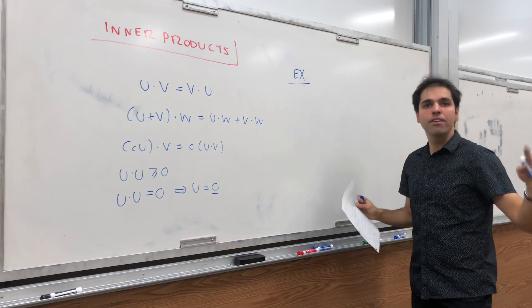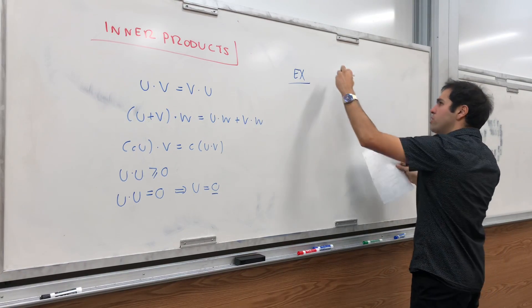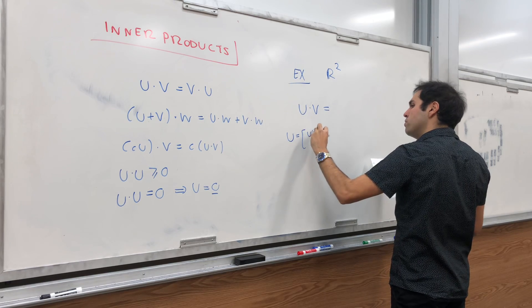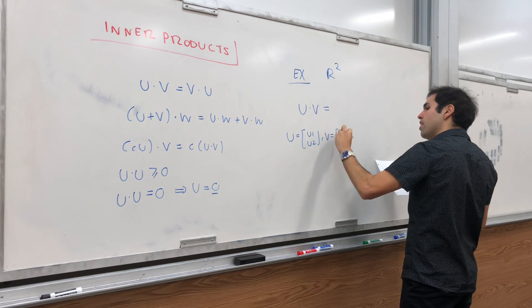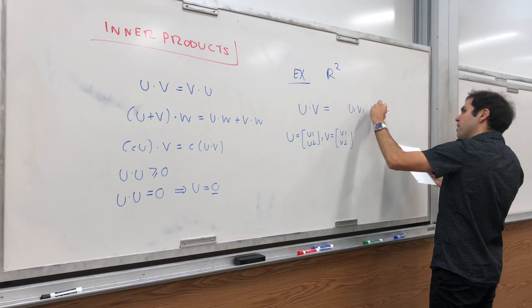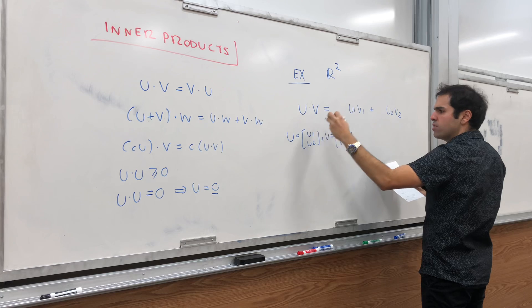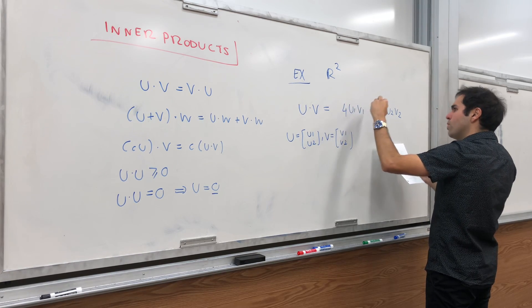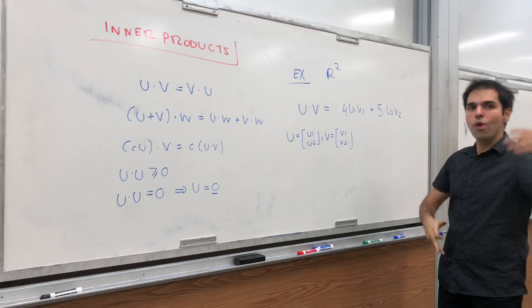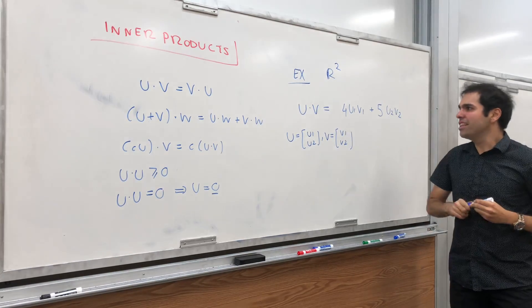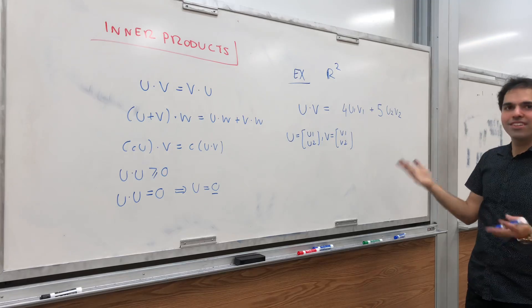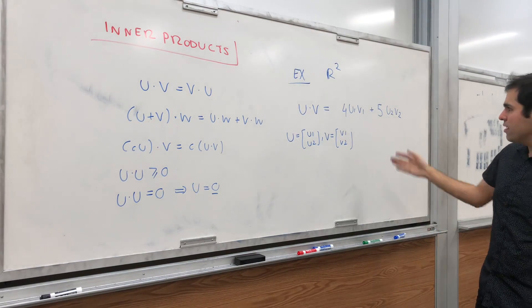For example, take the space R². If u = (u₁, u₂) and v = (v₁, v₂), then define u dot v as 4·u₁v₁ + 5·u₂v₂. This is like the usual dot product but with extra weights — you're emphasizing the first component and de-emphasizing the second, if you like.